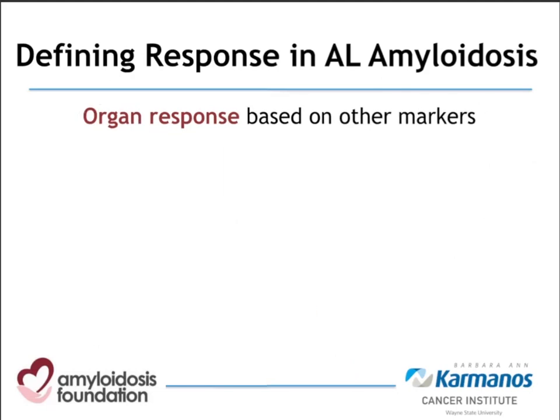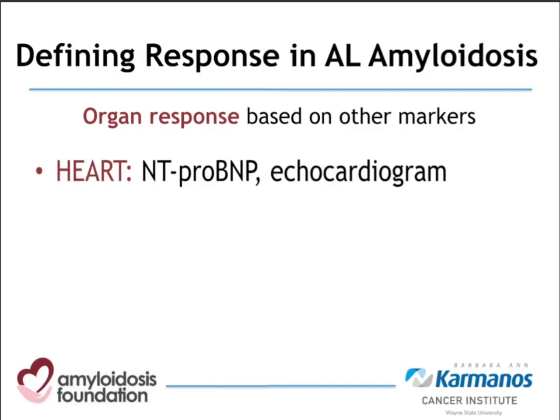Organ response is not assessed solely on blood work, although for the major organs affected by AL amyloidosis, we do incorporate blood work. For the heart, we measure NT-proBNP serially over time and like to see at least a 30% decrease. It's also possible to see echocardiographic improvement — an echocardiogram is an ultrasound of the heart — where we can assess both pump function and stiffness of the heart.